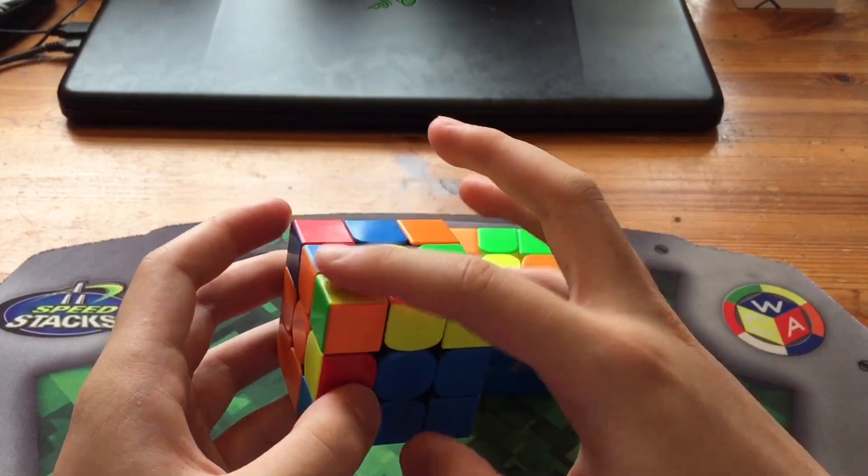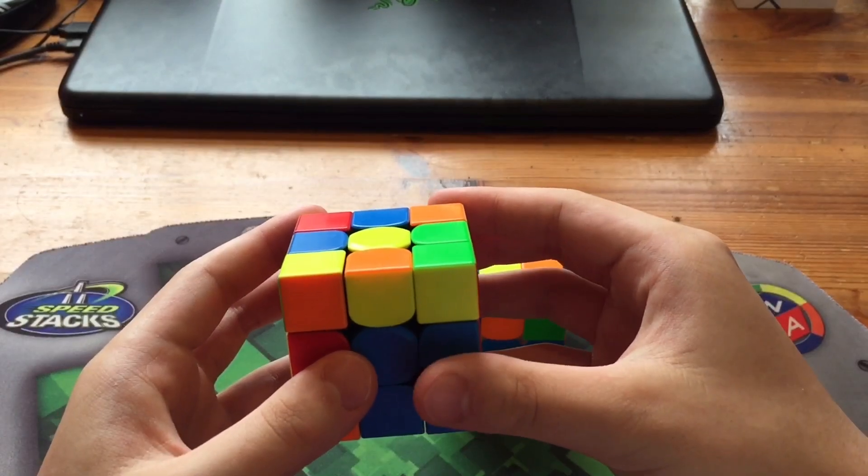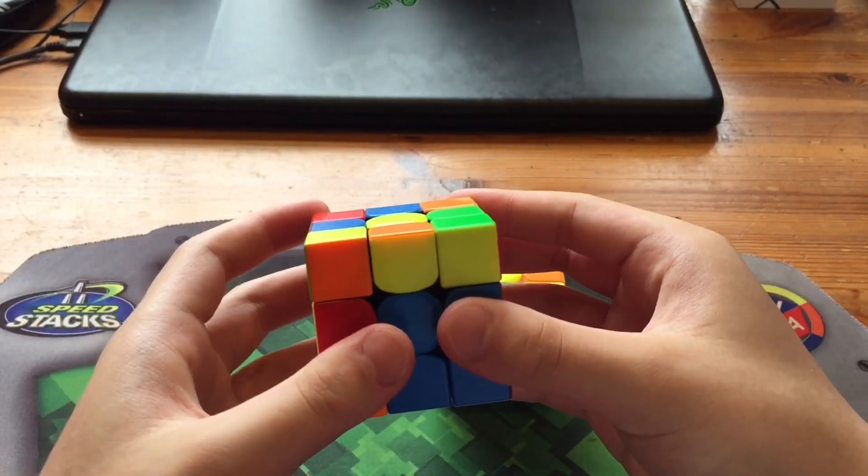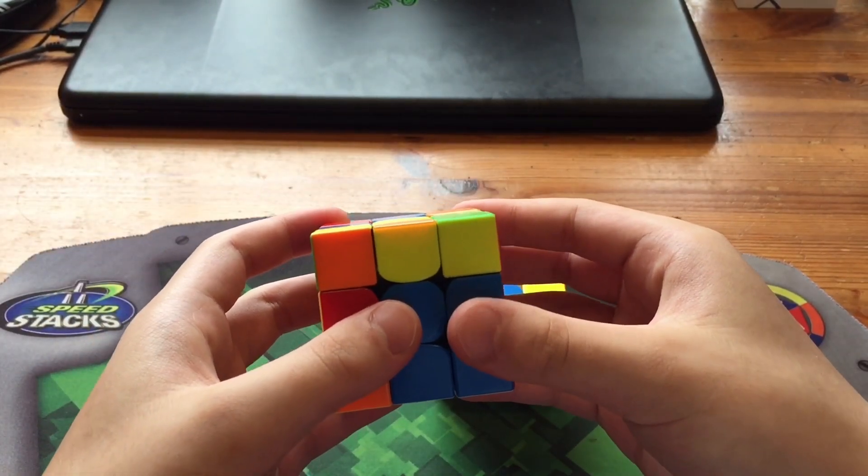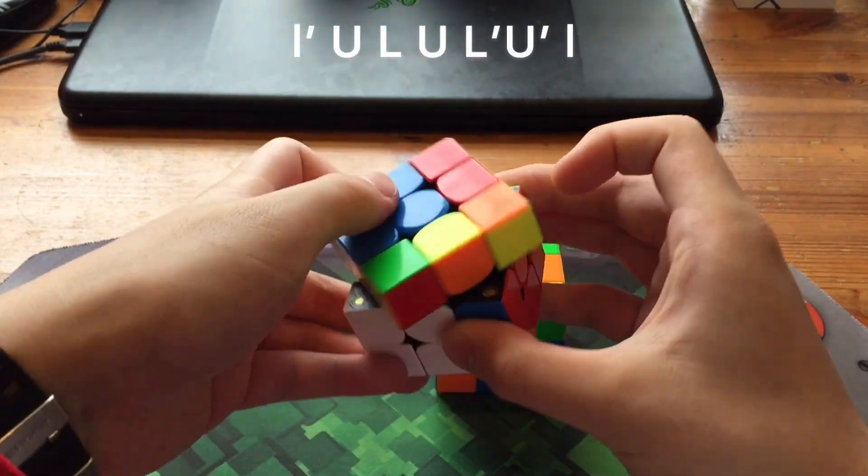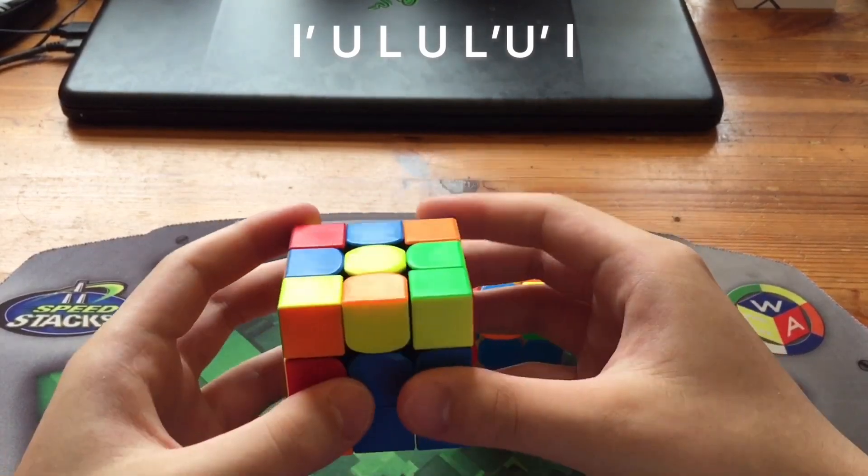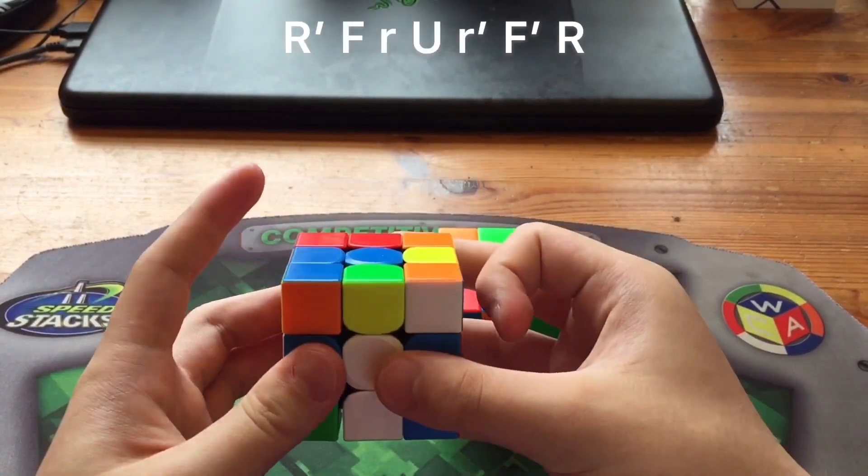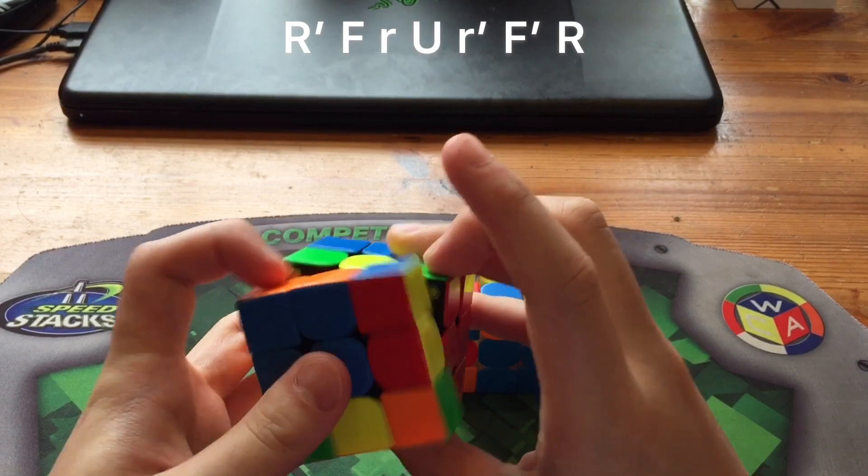So the first one, you do the same alg except you start and end with wide moves, so it goes like that. Or you can think of it as R prime F wide R U R2 prime F prime R and fast.